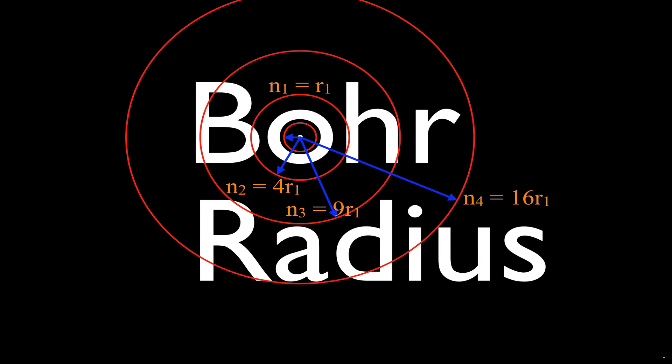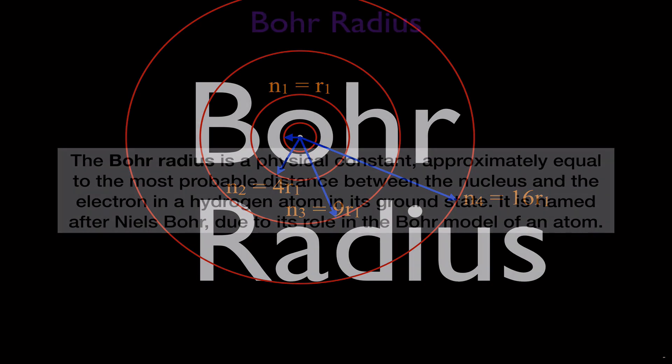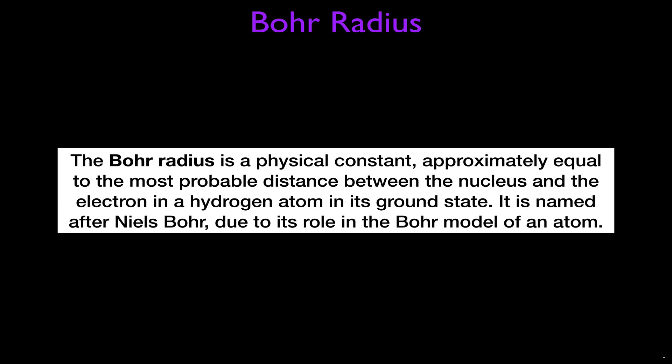In today's video we're going to be going over an explanation and a derivation for the equation we use to find the Bohr radius in a hydrogen atom. The Bohr radius is a physical constant, and it's important to remember that it's approximately equal to the most probable distance between the nucleus and the electron. It's named after Niels Bohr because of his role in finding the Bohr model of the atom. We now know that electrons don't go around in circular orbits — they exist in electron clouds or orbitals — but this is the most probable distance for the electron from the nucleus of a hydrogen atom.